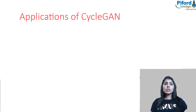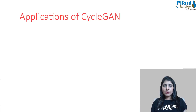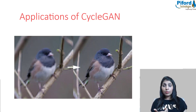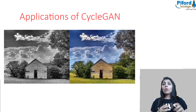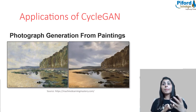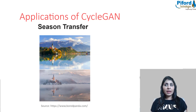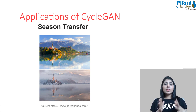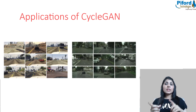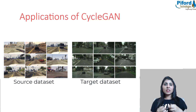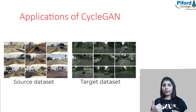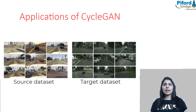The applications of CycleGAN include lots of interesting tasks: photo enhancement, image colorization, generating photographs from paintings, season transfer, and style transfer. All these kinds of things we can do with CycleGAN. The only thing you need is a source dataset and a target dataset — simply two folders, one with source images and one with target images, and they can be any random images.